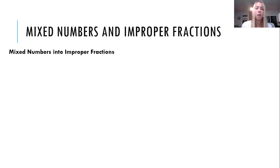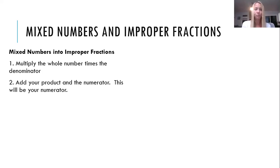So we're going to start with turning mixed numbers into improper fractions. Step one is to multiply the whole number times the denominator. Step two is to take that product from step one and add it with your numerator. This number that you're going to get is going to become the new numerator in your improper fraction. Step three is that your denominator stays the same.